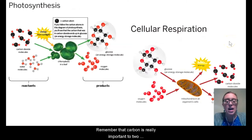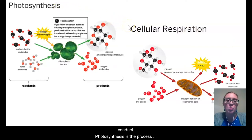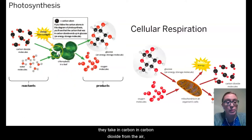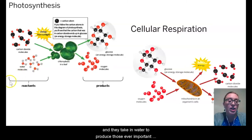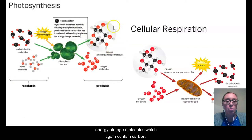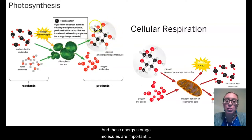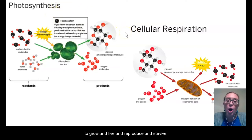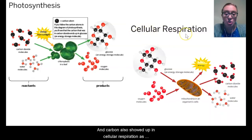Remember that carbon is really important to two processes that the living things within our biodome conduct. Photosynthesis is that process by which plants take in energy from sunlight, they take in carbon and carbon dioxide from the air, and they take in water to produce those ever-important energy storage molecules, which again contain carbon. And those energy storage molecules are important because that is how all of the living things, including the plants, get their energy to perform these processes and to grow, live, reproduce, and survive. Carbon also showed up in cellular respiration.